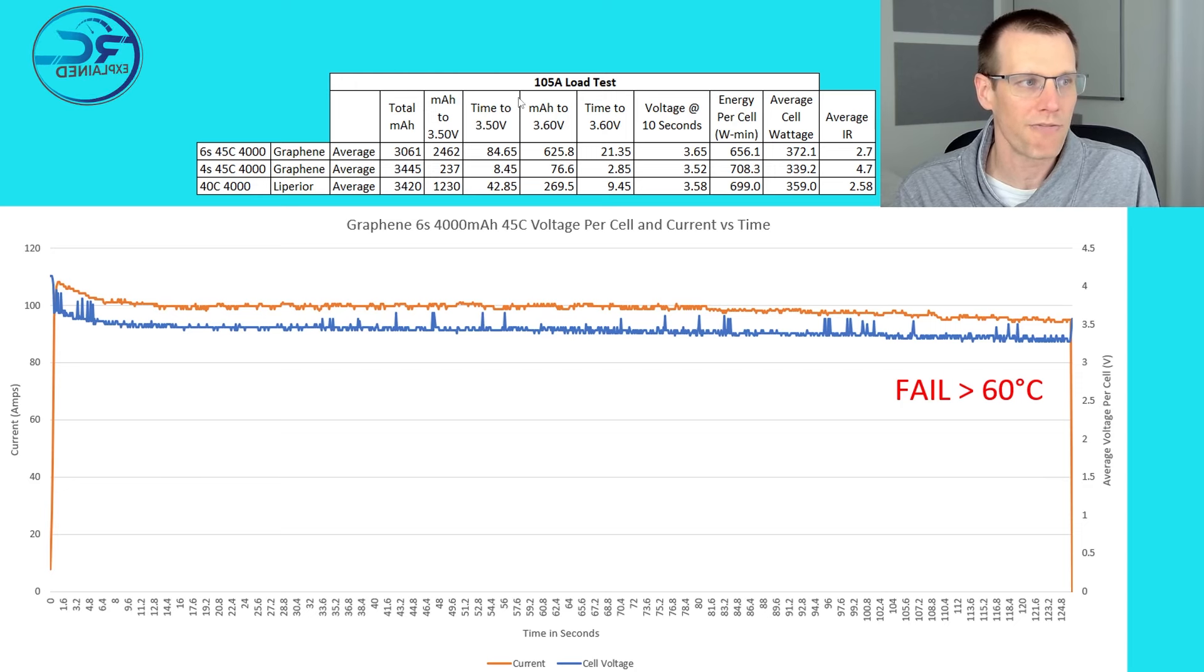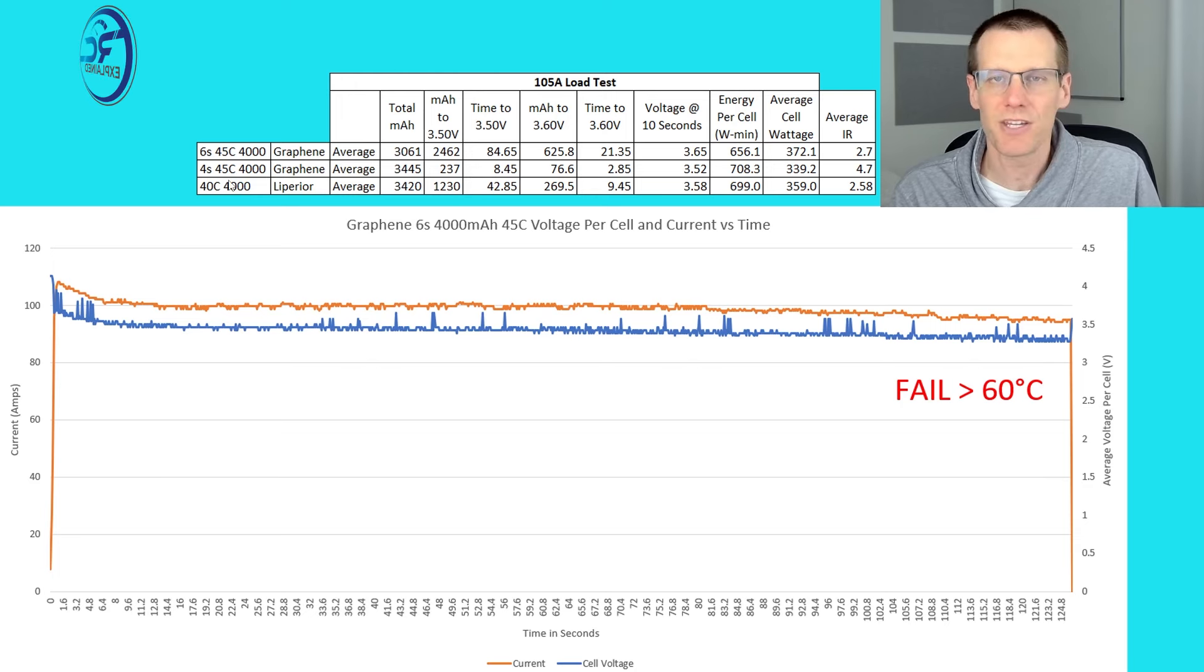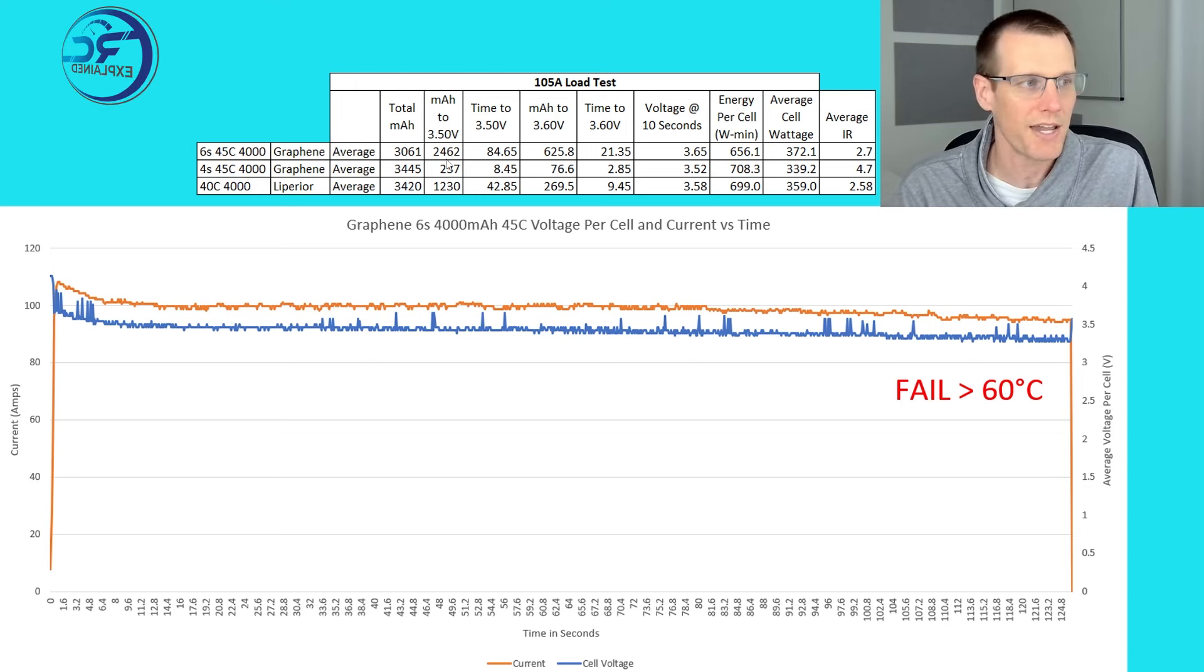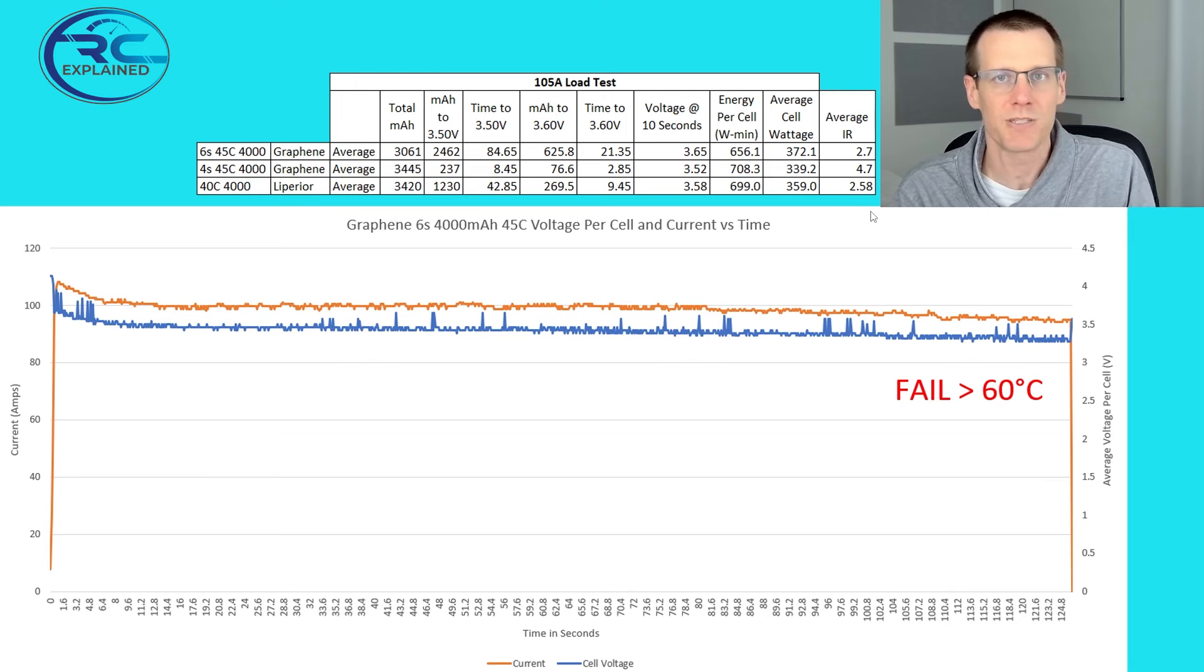Now when it comes to the milliamp hour of all of these and the time, we got a much better result with our graphene 6S than even the graphene 4S. Now if you look at the milliamp hour to 3.5, it's very small on the 4S pack that we tested weeks ago versus the one we just did here today at 2462. Now there's a big reason as to why we got this and it's probably to do with the internal resistance that we're seeing between these packs. 4.7 versus 2.7 is essentially double the internal resistance, meaning we're going to get less performance.